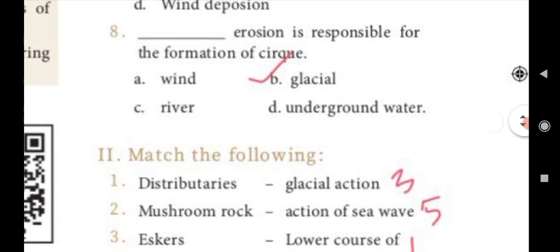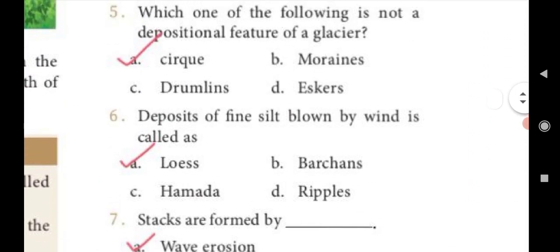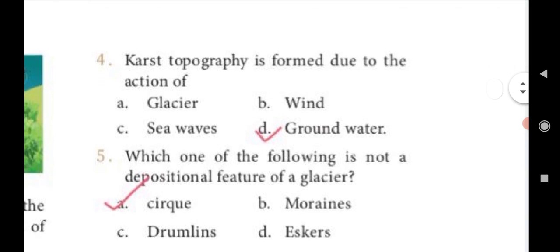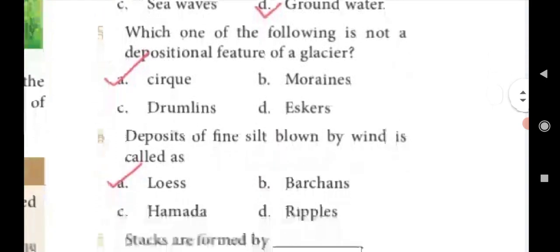Fourth question: Karst topography is formed due to the action of? D, groundwater. Karst topography is formed due to the action of groundwater.